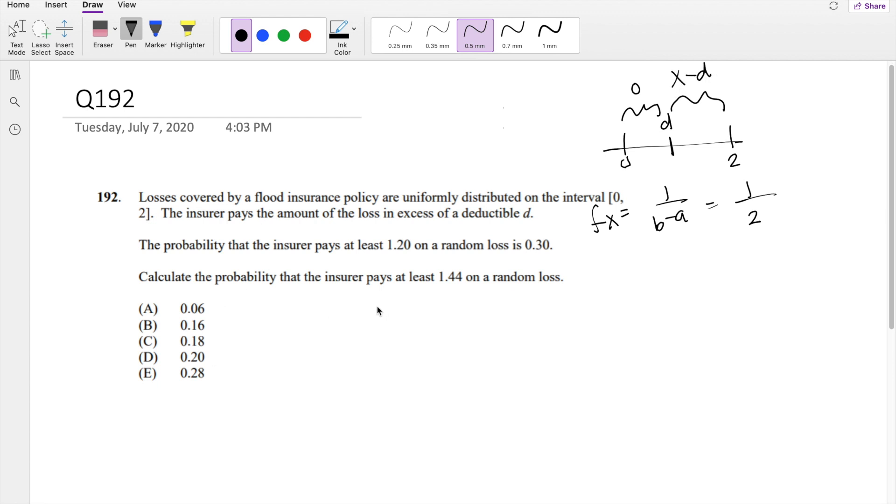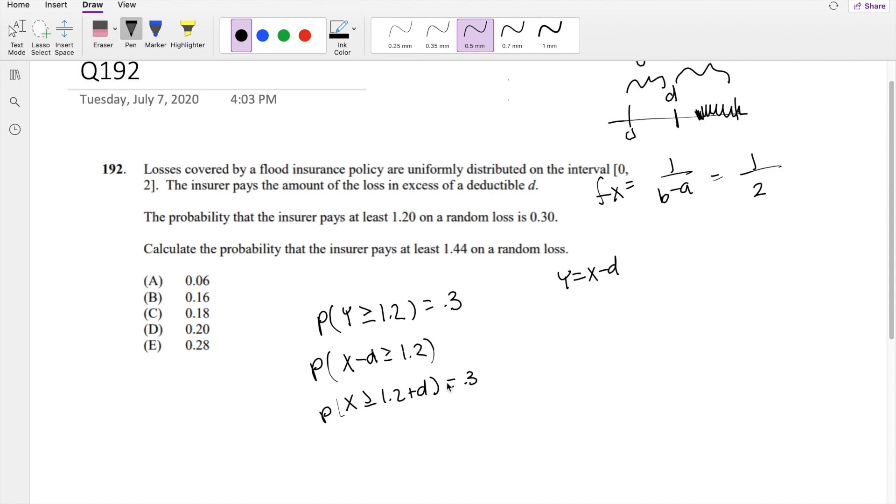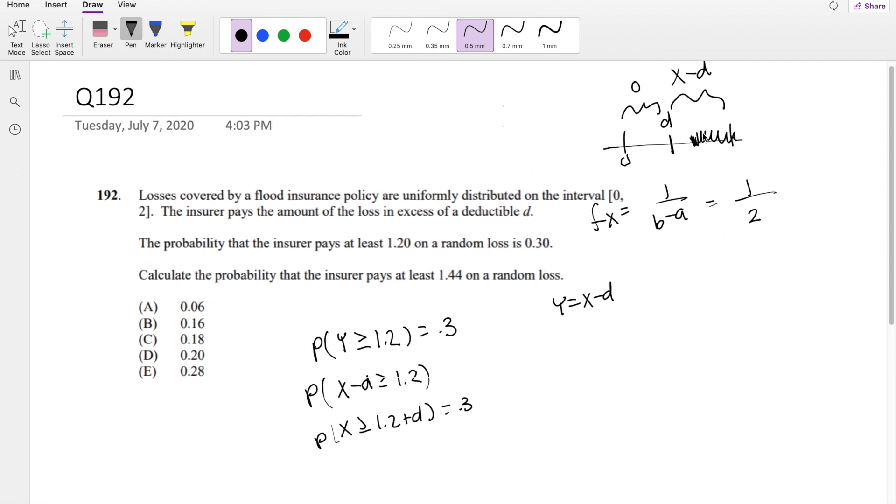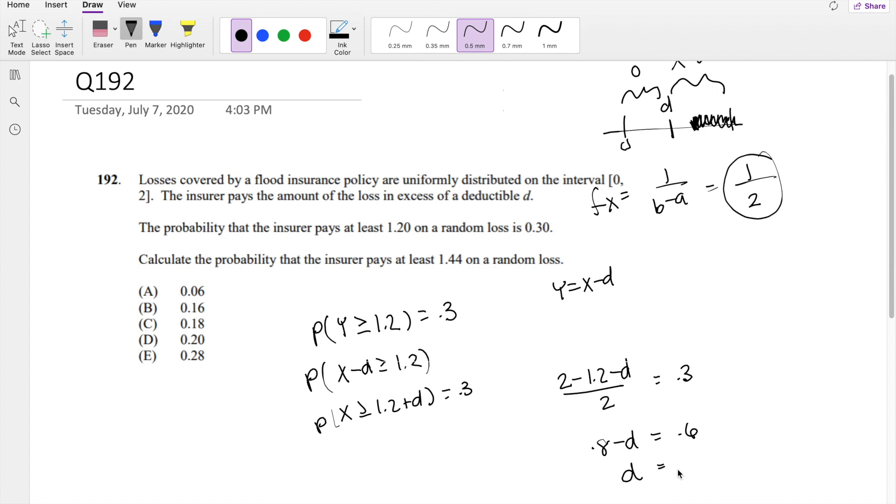So then they're saying the probability that the insurer pays at least, so greater than or equal to 1.2, is equal to 0.3. We know that means in the x term, where y is equal to x minus D, if we put it in terms of x, that means x minus D is greater than 1.2, or the probability that x is greater than 1.2 plus D is equal to 0.3. So the probability that it is greater than some D plus 1.2 on is just that range. So 2 minus 1.2 minus D divided by the probability distribution, which we know to be 2, is equal to 0.3. So that means 0.8 minus D is equal to 0.6, and that would make deductible equal to 0.2.